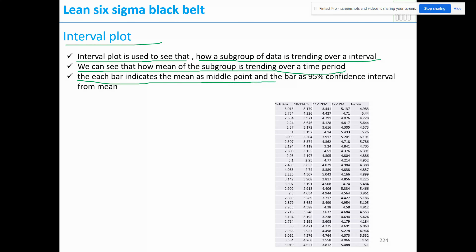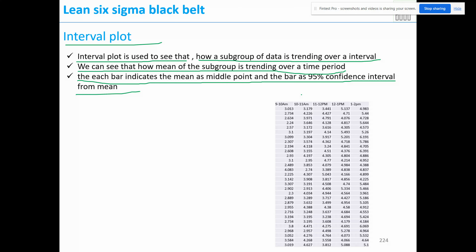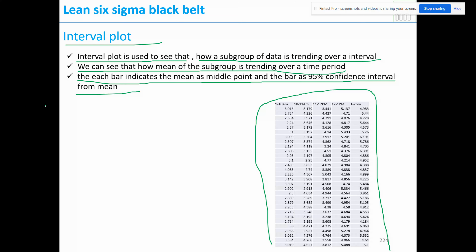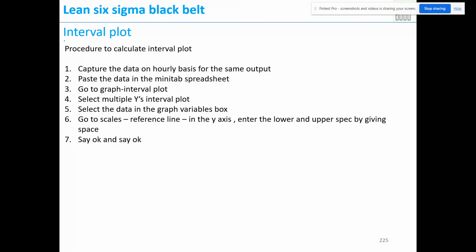Each bar indicates the mean as the middle point, and the bar represents the 95% confidence interval from the mean. For each subgroup we plot how the 95% confidence interval and the mean are trending.